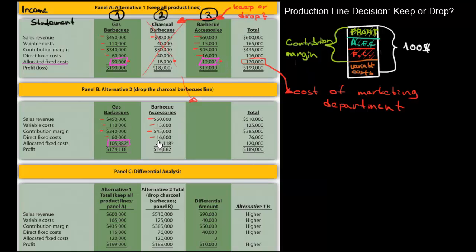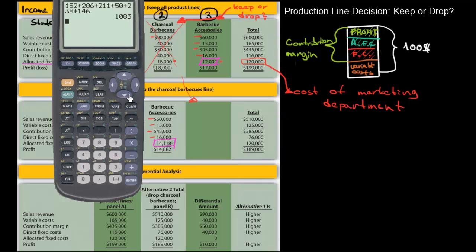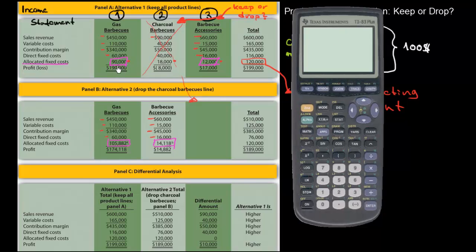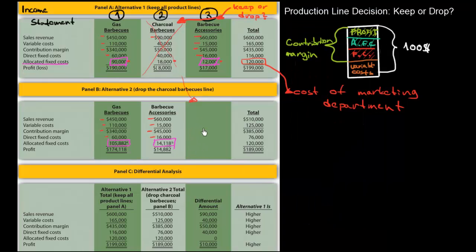Now the allocated fixed costs change — originally 12,000, now 14,118. Let me check with my calculator: originally it was 90 plus 120, now it is 105 plus 14,118. I will keep the topic of allocation of fixed costs that cannot be tracked directly for another video, so let's continue.